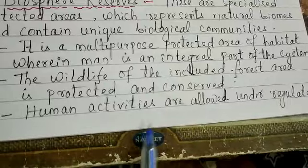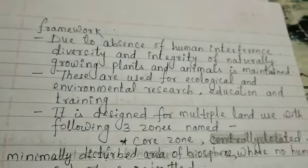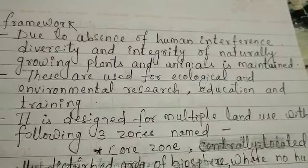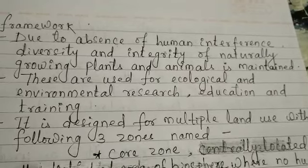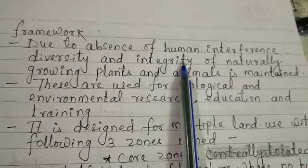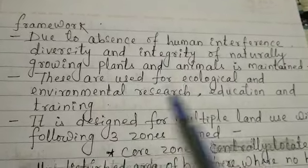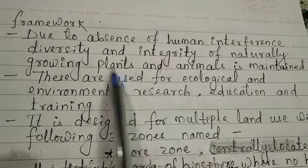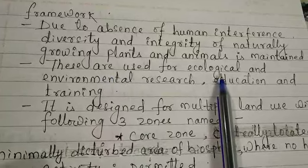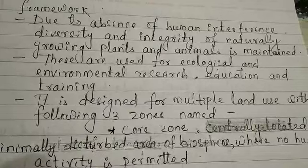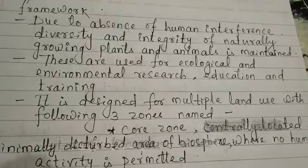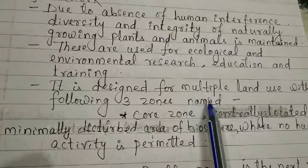Human activities are allowed under regulated conditions. Due to the absence of unlimited human interference, the diversity and integrity of naturally growing plants and animals is maintained. Human activities are restricted to certain zones only. Biosphere reserves are also used for ecological and environmental research, education, and training — scientists and students can enter with permission. They are designed for multiple land use.